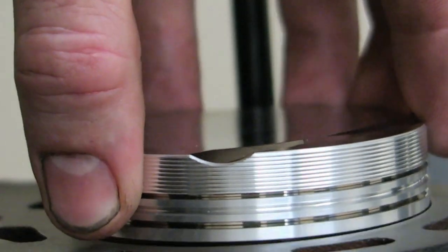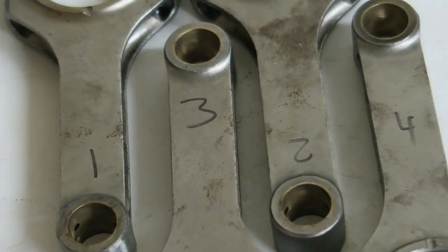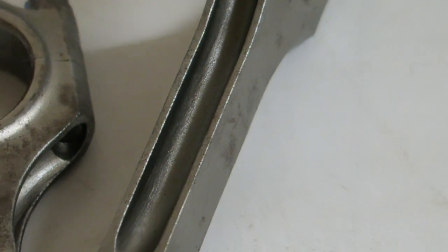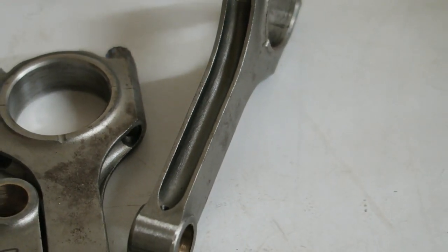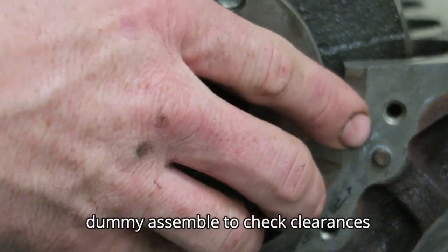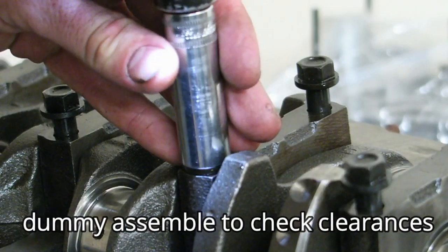One millimeter oversized Wiseco piston. These forged rods you can see here are from the previous forged engine I had in one of my others. We had some problems there with the other style pistons we'll be using, so we're going to reuse these rods for this current engine now.